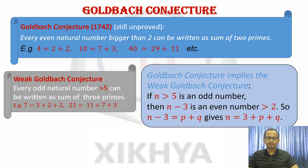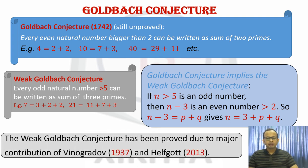If we have an odd number bigger than 5, then let's take n minus 3, which is an even number because it is difference of two odd numbers. And it will be still bigger than 2. So n minus 3 should be able to be expressed as p plus q, in which case n will be 3 plus p plus q. And the good thing is that this weak conjecture has been proved due to major contribution by Vinogradov and Helfgot. Vinogradov showed that for sufficiently large odd number this conjecture holds, still there were like a lot of smaller odd numbers to be considered, and Helfgot did that.